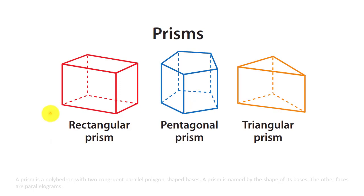A prism is a polyhedron with two congruent parallel shaped bases. A prism is named by shape of its bases. For example, rectangular prism has rectangular bases, pentagon prism has pentagonal bases, and triangular prism has triangular base. The other faces are parallelograms.